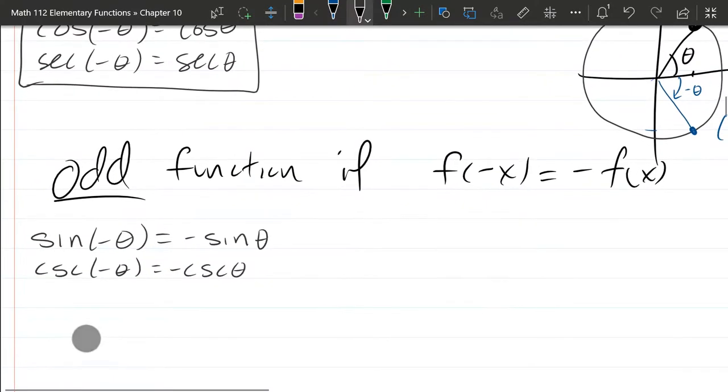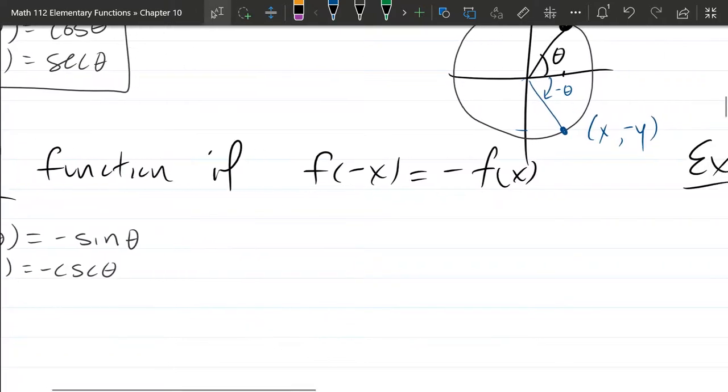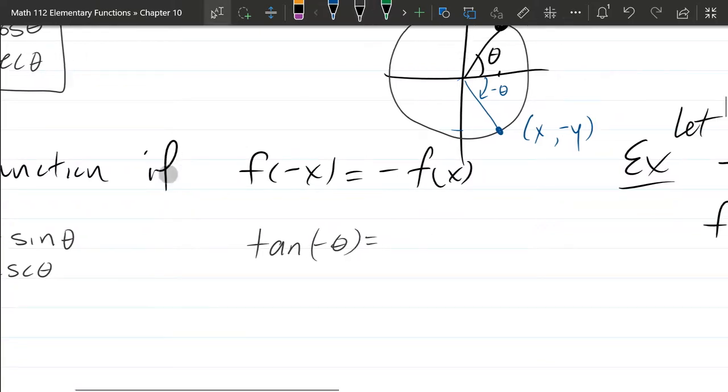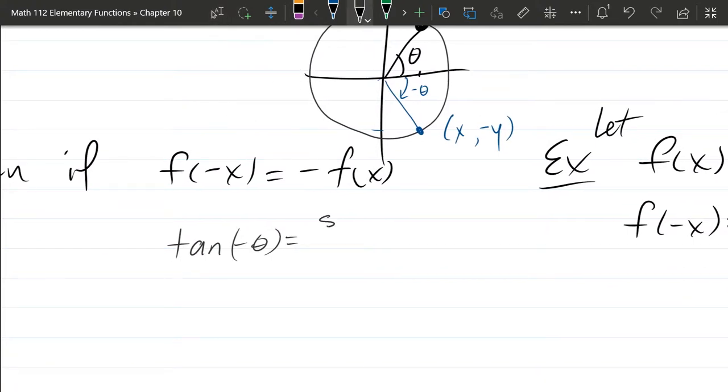So now for tangent and cotangent, we're going to use algebra. So let's start with tangent negative theta. One of the strategies, one of the ways to deal with tangent is write in terms of sines and cosines. Now this is tangent of negative theta. So it's sine negative theta over cosine negative theta. And now we already have the even-odd properties.